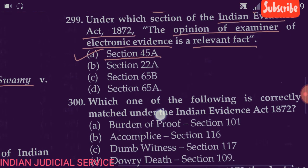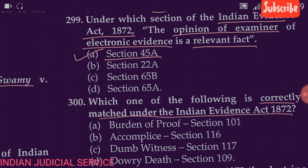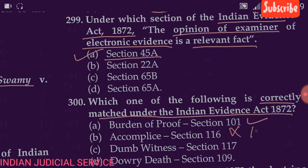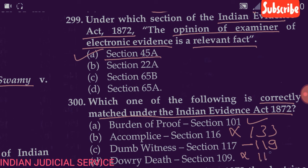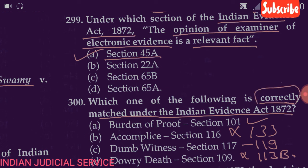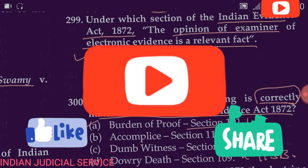Question 300: Which of the following is correctly matched under the Indian Evidence Act 1872? Option A: burden of proof under Section 101 — correct. Option B: accomplice under Section 116 — wrong, it is Section 133. Option C: burden of proof — wrong, it is provided under Section 119. Option D: also wrong, it is provided under Section 113B. The correct statement is Option A — burden of proof under Section 101 of the Evidence Act.